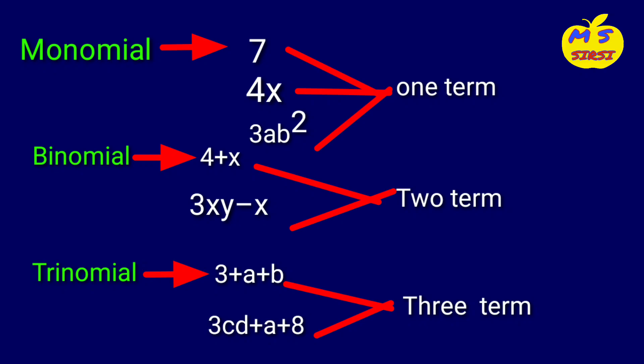Next, the binomial means two terms. Four plus x has only two terms: four and x. Next, three xy minus x also has two terms: three xy and x.